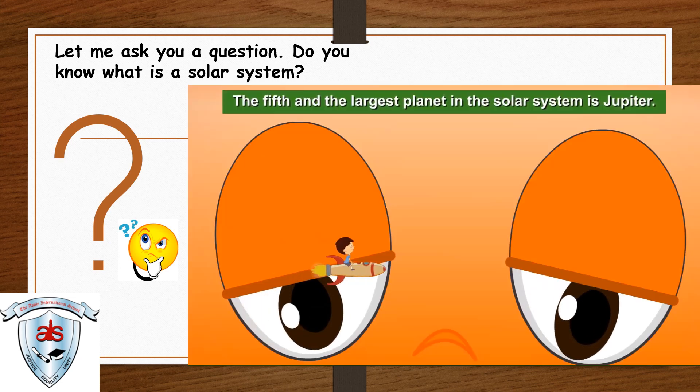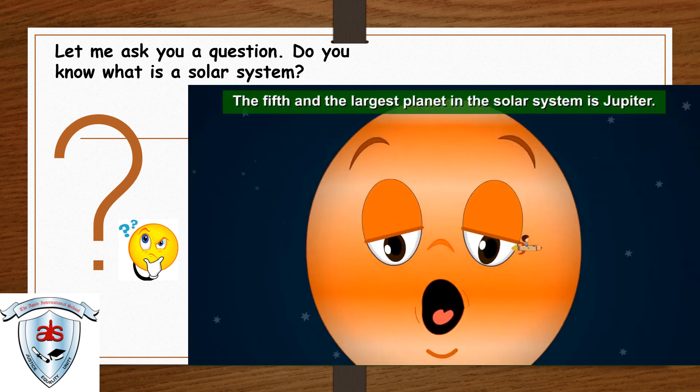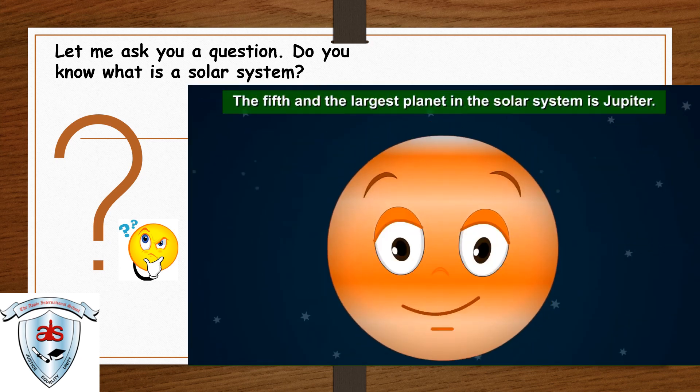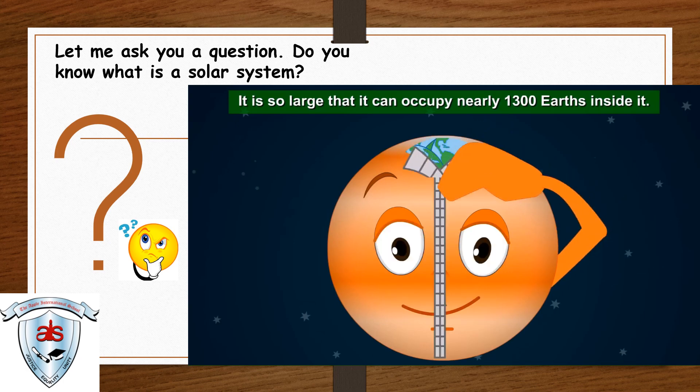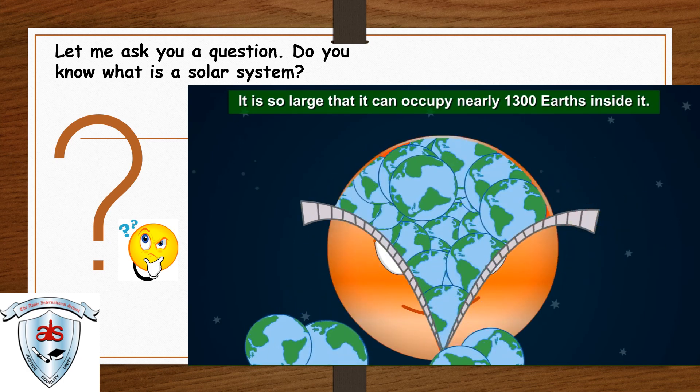The fifth and the largest planet in the solar system is Jupiter. It is so large that it can occupy nearly 1,300 Earths inside it.